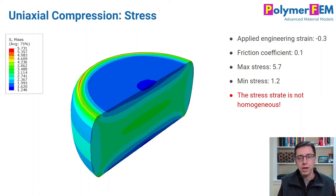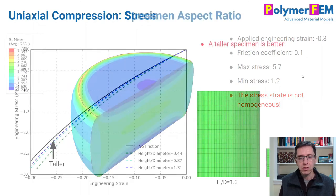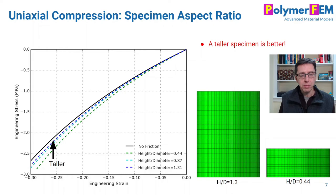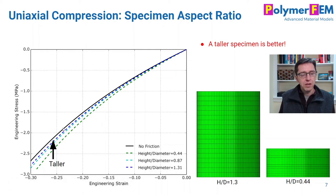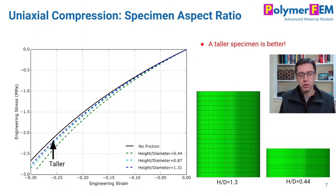What most people do when running these experiments is try to lubricate using oil or Teflon sheets to get the friction coefficient as low as possible. You can often get it to less than 0.1, but you can't get it to zero — and that's the problem. Another thing you can do is use larger, taller specimens where the ratio of height to diameter is a larger number. That helps. You can see in this figure that the taller specimen with a given friction coefficient of 0.1 has a lower error. However, you can't make it too tall because then the specimen will buckle, so there is a limit to how far you can go to minimize the influence of friction.